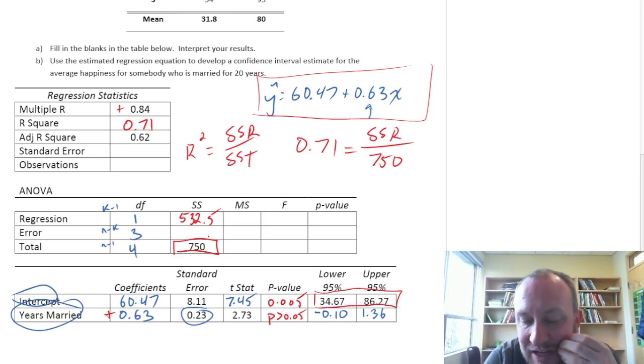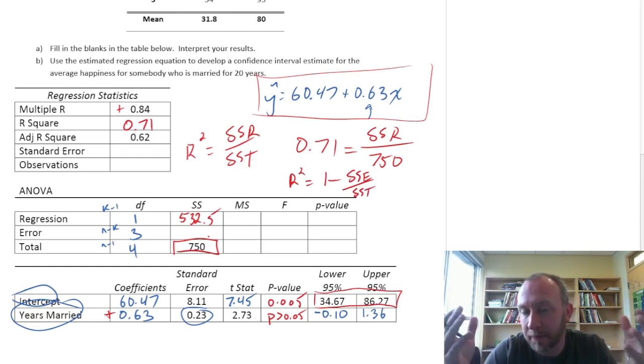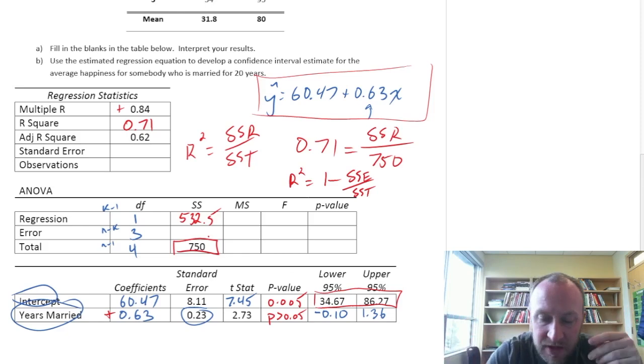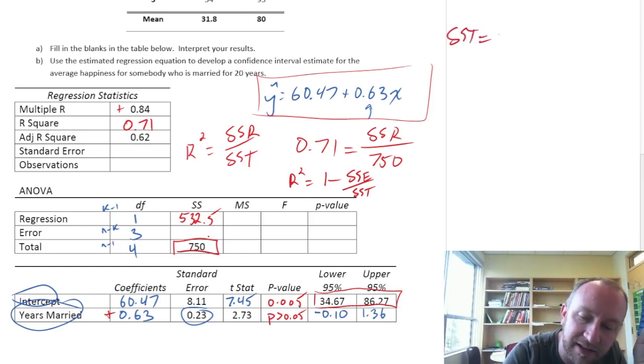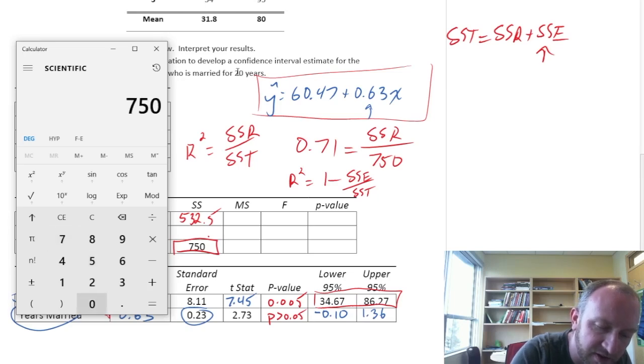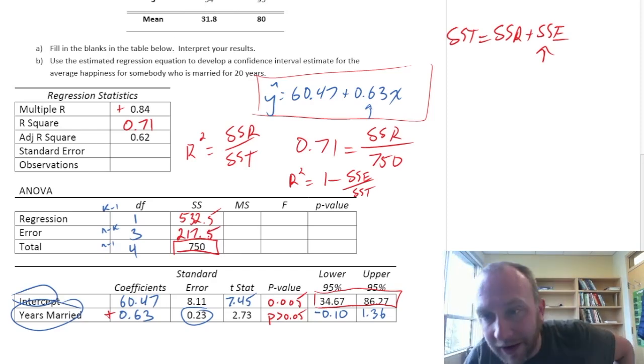Now for SSE, there's really two ways that we can find SSE. One is to take advantage of the fact that R squared can also be calculated like this. It's either R squared is the percentage of total variation that our regression explains, or 1 minus the percentage of variation that our regression doesn't explain. Or we can also take advantage of the relationship that SST is the sum of SSR plus SSE. So if I rearrange this and I solve for SSE, I have 750 is SST minus SSR, 532.5. So SSE is 217.5. All that is just from R squared and SST.